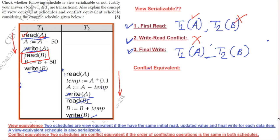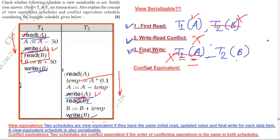The write-read conflict was not present in the earlier schedule, so that condition is fine. For final write on A: in the serial schedule T2 is making the final write on A, but in the original schedule T1 was making the final write on A. This is violated. The final write condition for B is satisfied, but since first-read and final-write on A are both violated, the schedule is not view serializable.